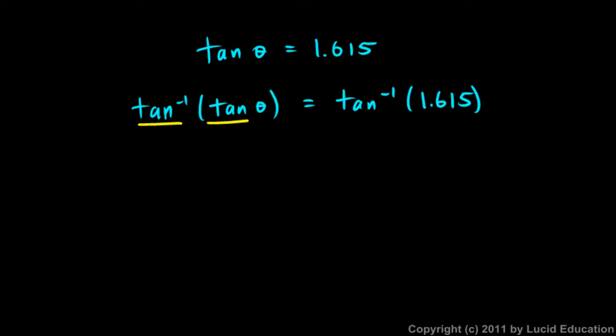If I square something and square root it, I'll get that original something because squaring and square root are inverse operations. Same thing happens here: if I take the inverse tangent of the tangent of something, I just get that something because the inverse tangent and the tangent undo each other—those are inverse operations. So the left side just becomes theta, and theta equals the inverse tangent of 1.615.